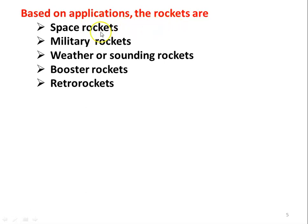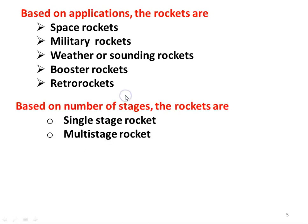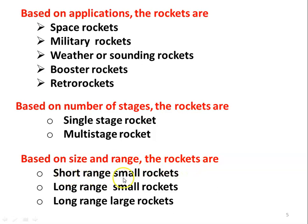Based on the application, rockets are classified as space rockets, military rockets, weather or sounding rockets, booster rockets, or retro rockets. Space rockets are used for space applications; military rockets are used for military applications like missiles; weather or sounding rockets are used to launch satellites into orbit; booster rockets boost step-by-step stages; and retro rockets are used for returning space flights to reduce velocity. Based on the number of stages, rockets are single-stage or multi-stage. Based on size and range, rockets are short range small rockets, long range small rockets, or long range large rockets.